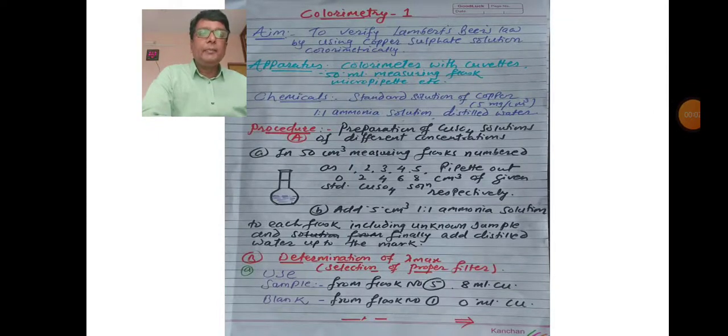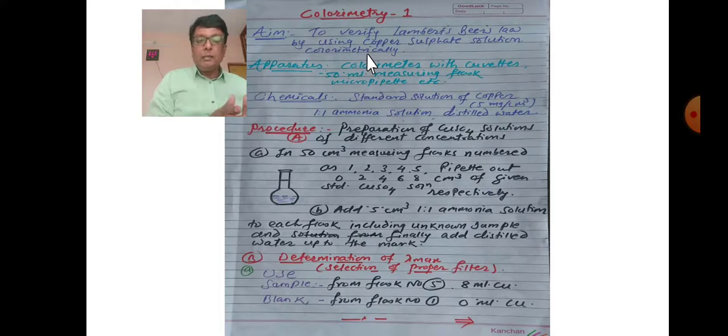Good morning students, Basic Part 3 Chemistry Physical Practicals Instrumentation. Let's start with colorimetry number one. The aim of today's experiment is to verify Lambert-Beer's law by using copper sulfate solution colorimetrically. Colorimetry means color measurement using a colorimetry instrument.